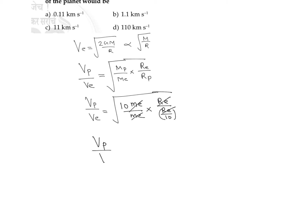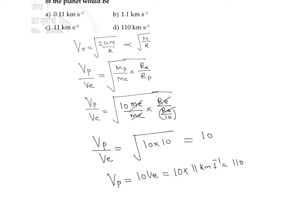After cancellation, the ratio becomes the square root of 10 multiplied by 10, which equals the square root of 100, which equals 10. So the escape velocity on that planet is 10 times the escape velocity on Earth. Since Earth's escape velocity is 11 kilometers per second, the escape velocity on that planet is 110 kilometers per second.